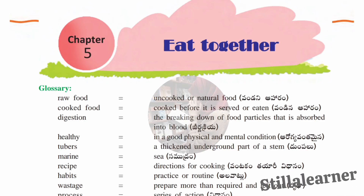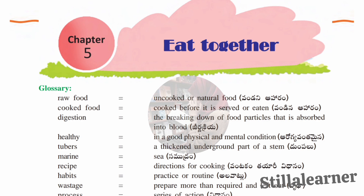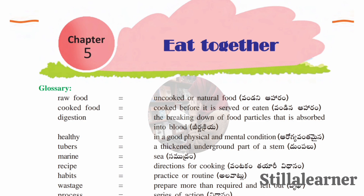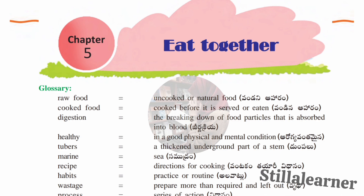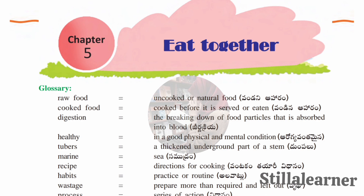Welcome back to my channel. Today in this video we are going to discuss fourth class EVS, fifth chapter workbook answers. Our title is 'Eat Together.' First we have given a glossary which means meanings or synonyms. Go through each and every meaning you have to remember. If you don't understand the meaning of a particular word, you can go through the Telugu in the bracket. Now we'll move to the first worksheet — the concept is 'Let's Eat Together.'